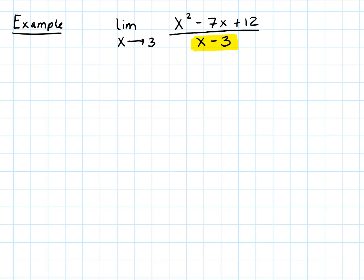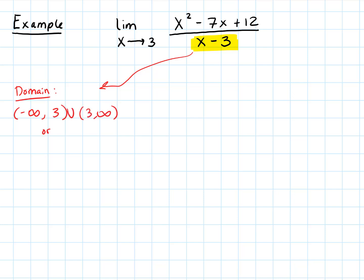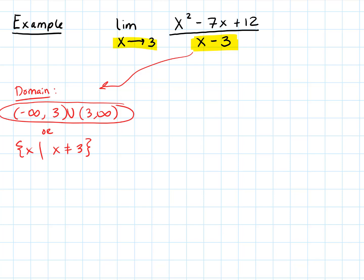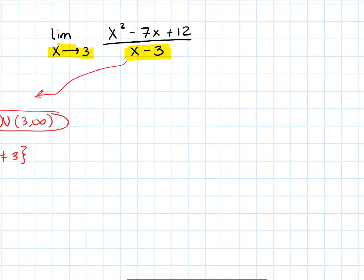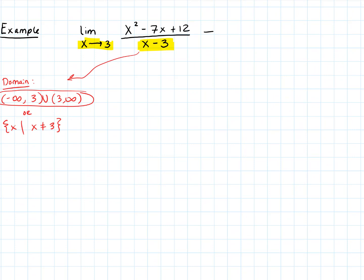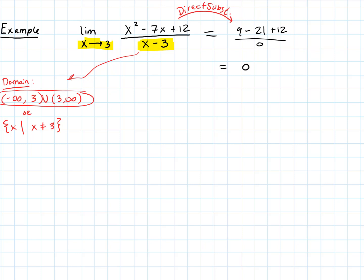With rational functions, division by 0 is the issue. Notice the denominator has x minus 3 — that's where we have a problem. The domain for this function is negative infinity to 3 and from 3 to infinity, so we're excluding 3. But x equals 3 is exactly where we're asked to find the limit. If I just try direct substitution anyway, I end up with 9 minus 21 plus 12 over 0, which gives me 0 over 0.